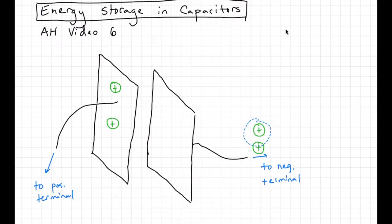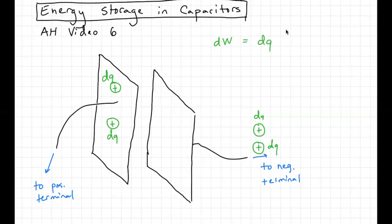One way to quantify how much work is being done: say each one of these little charges has a magnitude dq. If we want to calculate work, the magnitude of the work is just the magnitude of that charge times the voltage difference — the potential difference that the charge is moving across. When we move charge onto the left plate and off the right plate, we create a potential difference equal to q over C. The potential difference is proportional to the charge on the plates, and as more charge ends up on the plates, the amount of work it takes to move the next bit of charge gets bigger too.